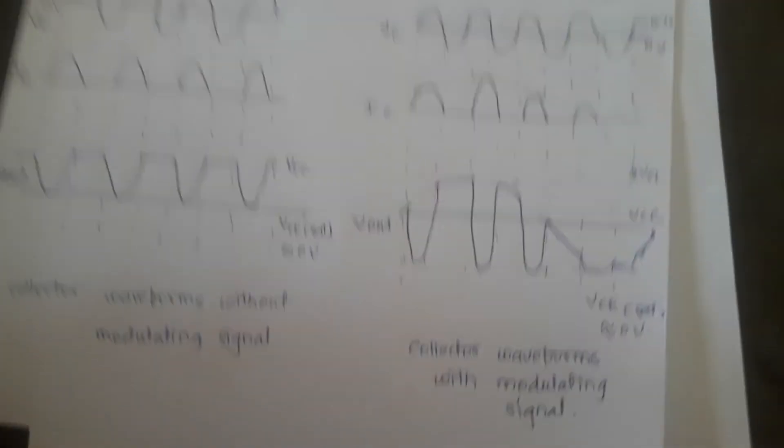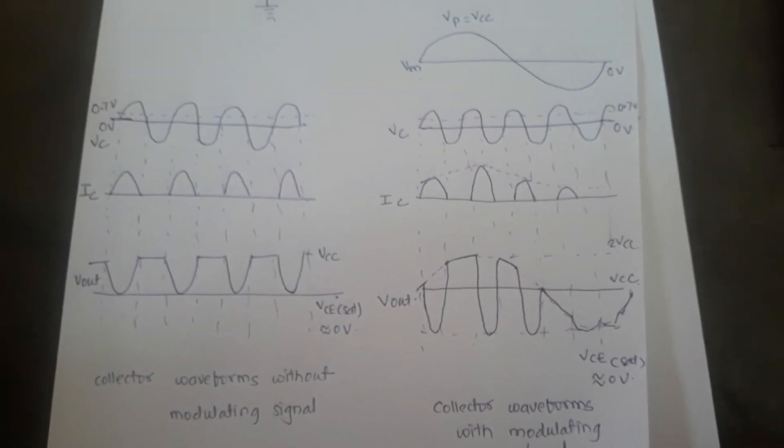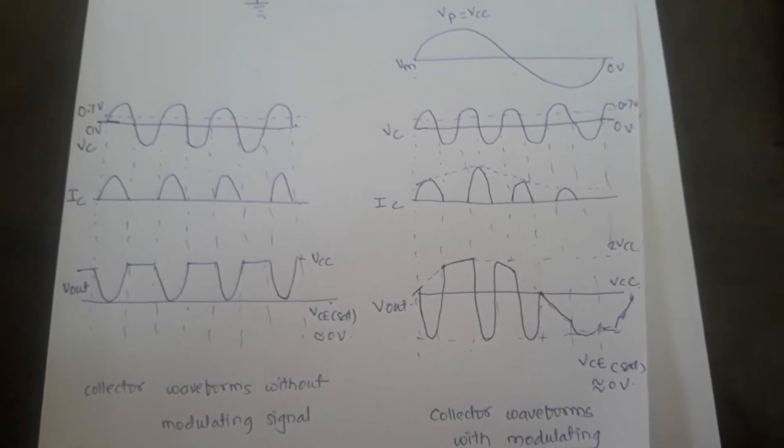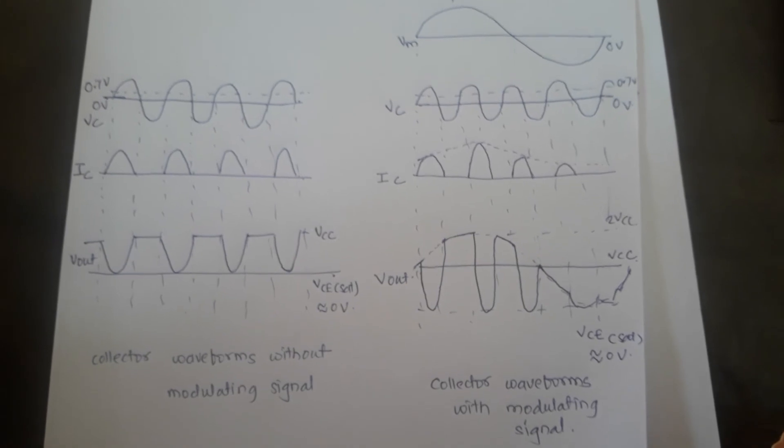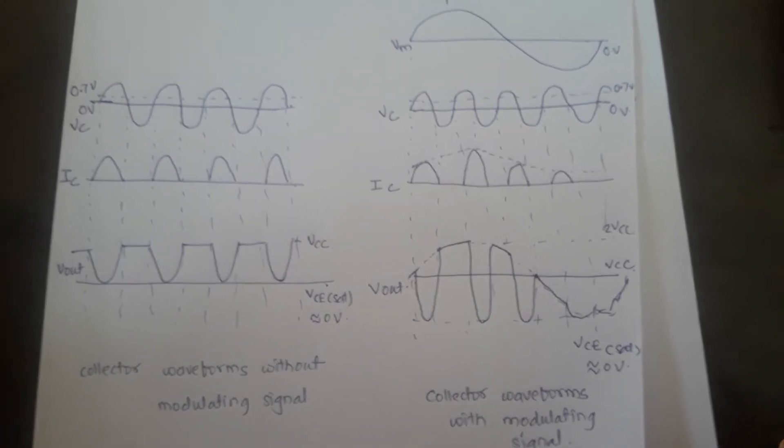Here we are observing the waveforms of the modulation or output of this particular signal. The first section indicates collector waveforms without modulating signal and second waveform indicates the collector waveforms with modulating signal.